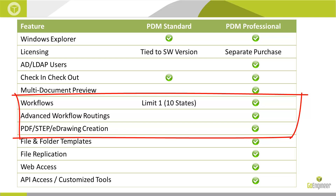In PDM Professional, however, you are not restricted on the number of workflows or workflow states. Files can follow different processes based on naming convention, folder path, data card variable, or any number of factors. We can introduce logic into the workflow to enable parallel approval paths or even transition files between workflows.